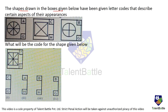The shapes drawn in the boxes given below have been given letter codes that describe certain aspects of their appearances. Now if you observe all three shapes, the first one and the last one has a circle in it and they have G common. So the code G must stand for circle, and H must be standing for square.